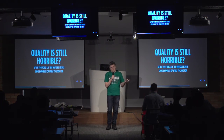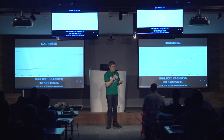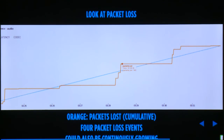Even after fixing those issues, quality can still be bad. Looking at throughput, here's a graph showing cumulative packet loss over time — you can see four events with packet loss. Typically in those cases, bandwidth adaptation will reduce frame rate and resolution, and users perceive that as blocky, bad video quality. You can also have continuous packet loss, as shown in the blue line, which is a different kind but still needs to be handled.